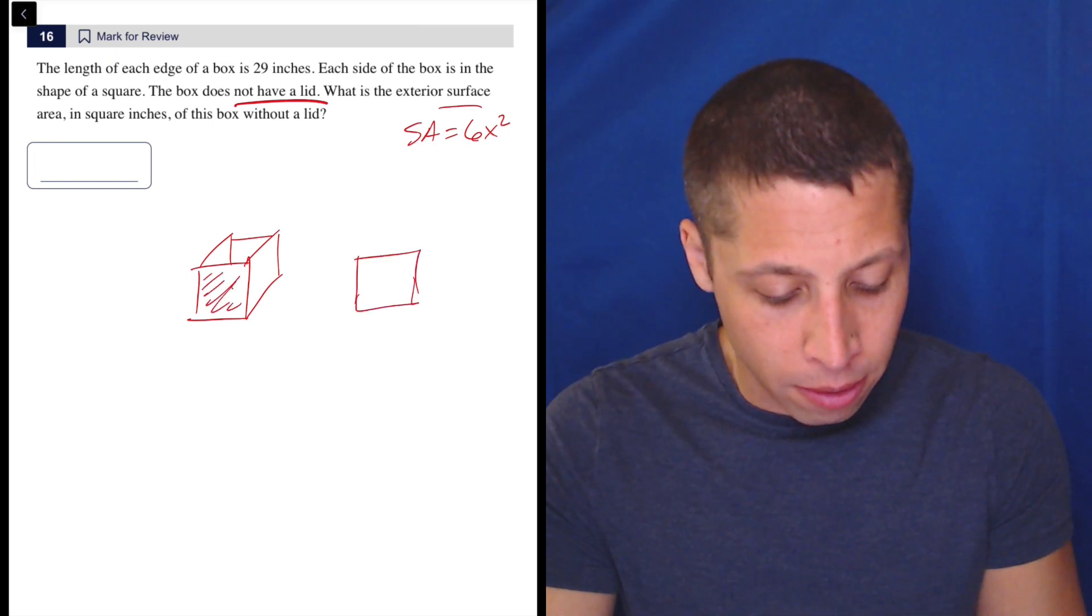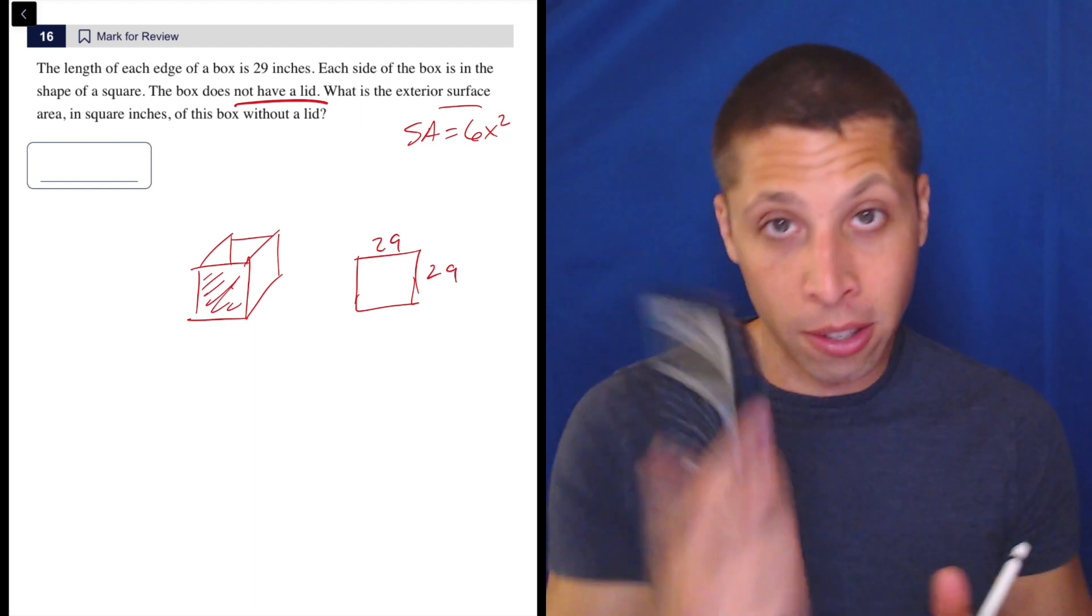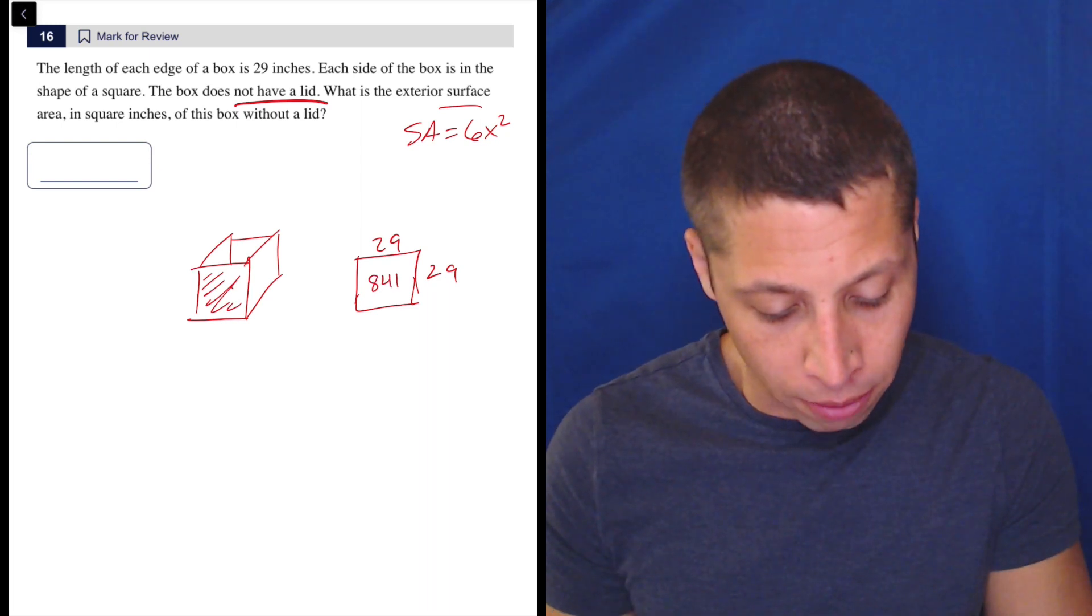So one face is a square. We can pull it off if we need, and that's 29 by 29, which is, all right, regular calculator, 29 times 29 is 841.